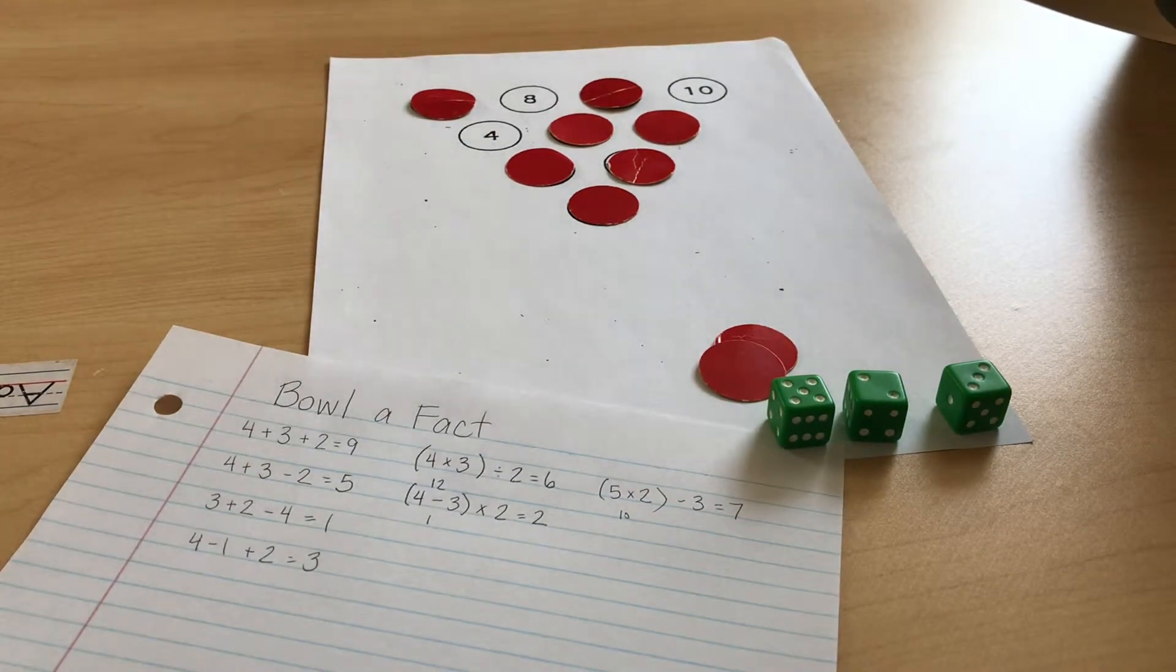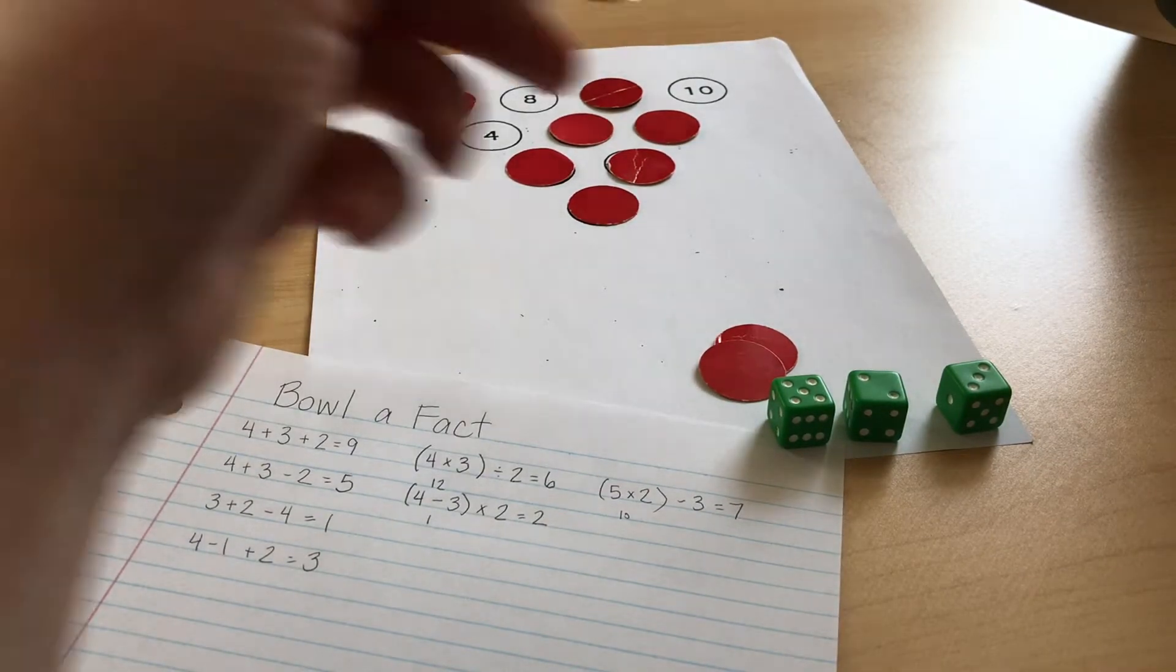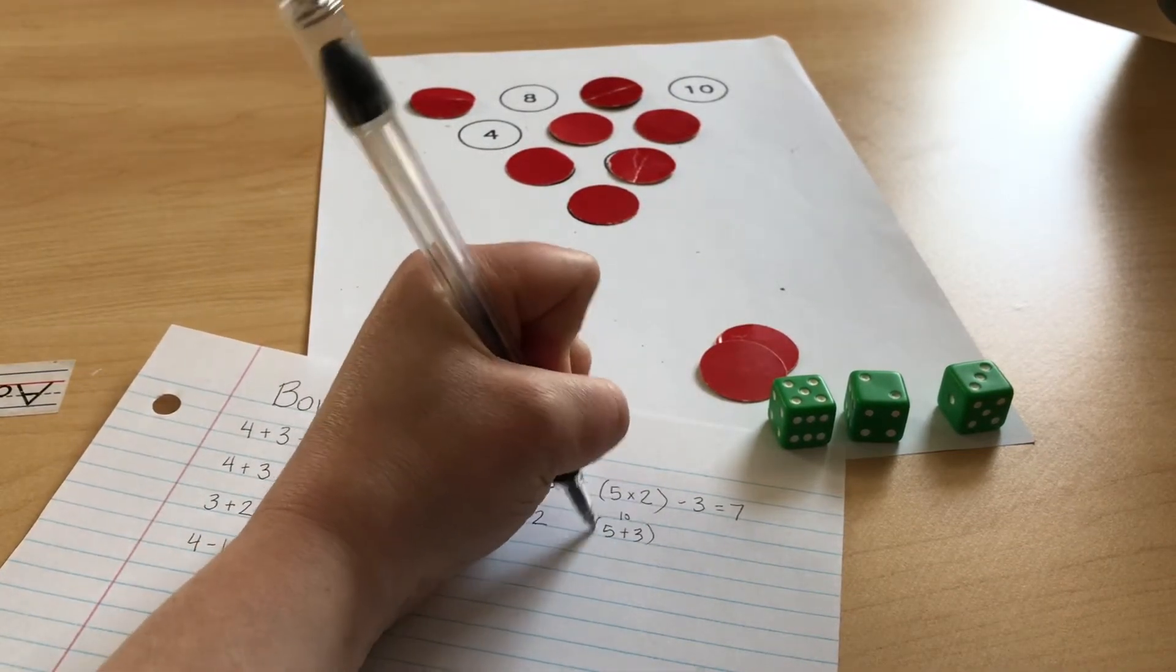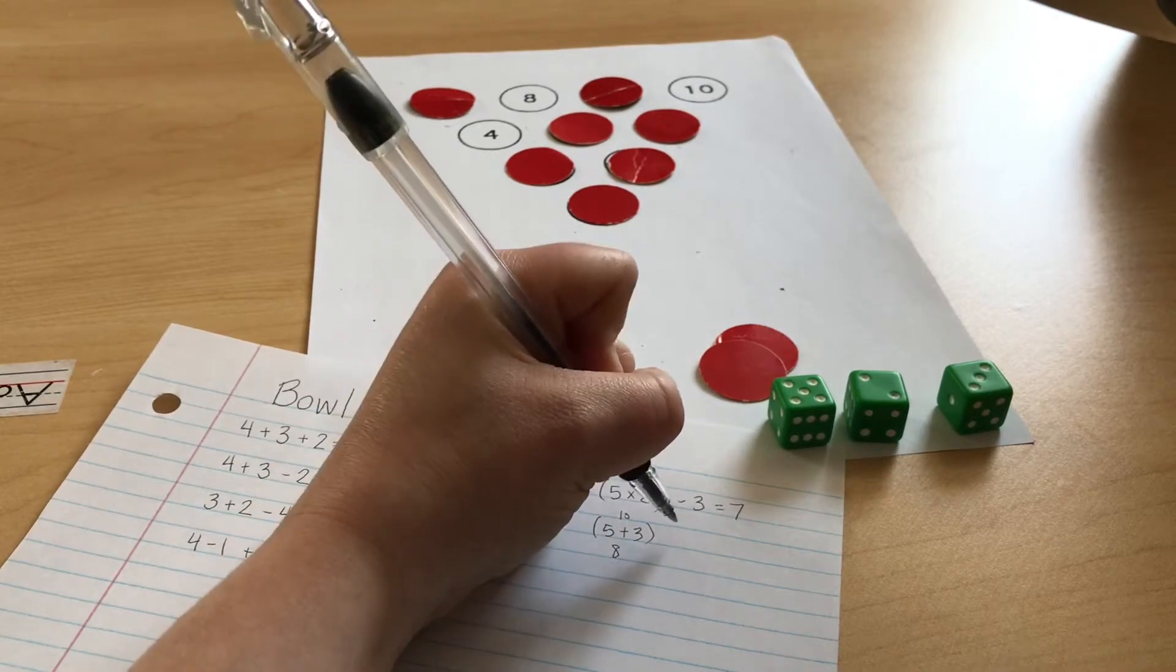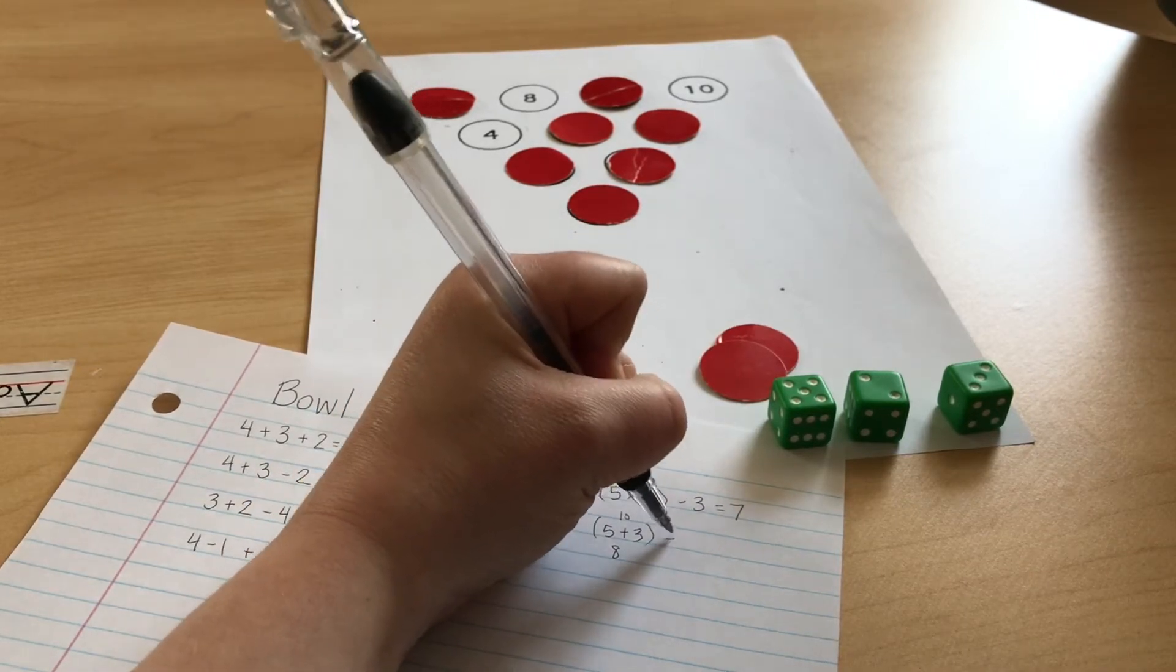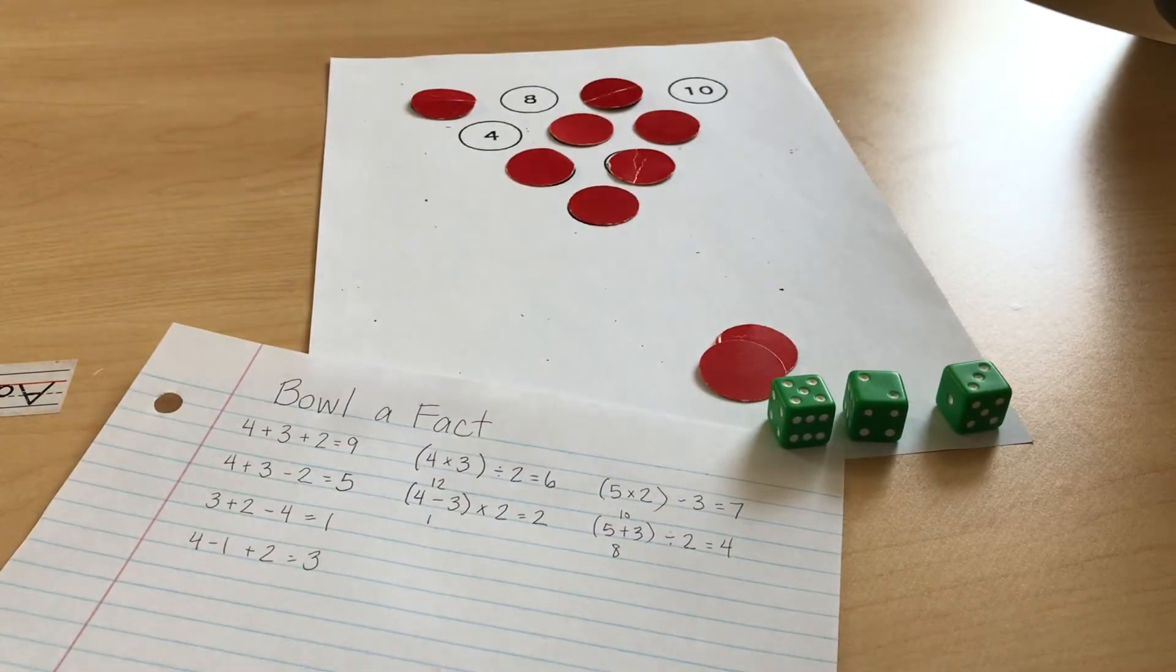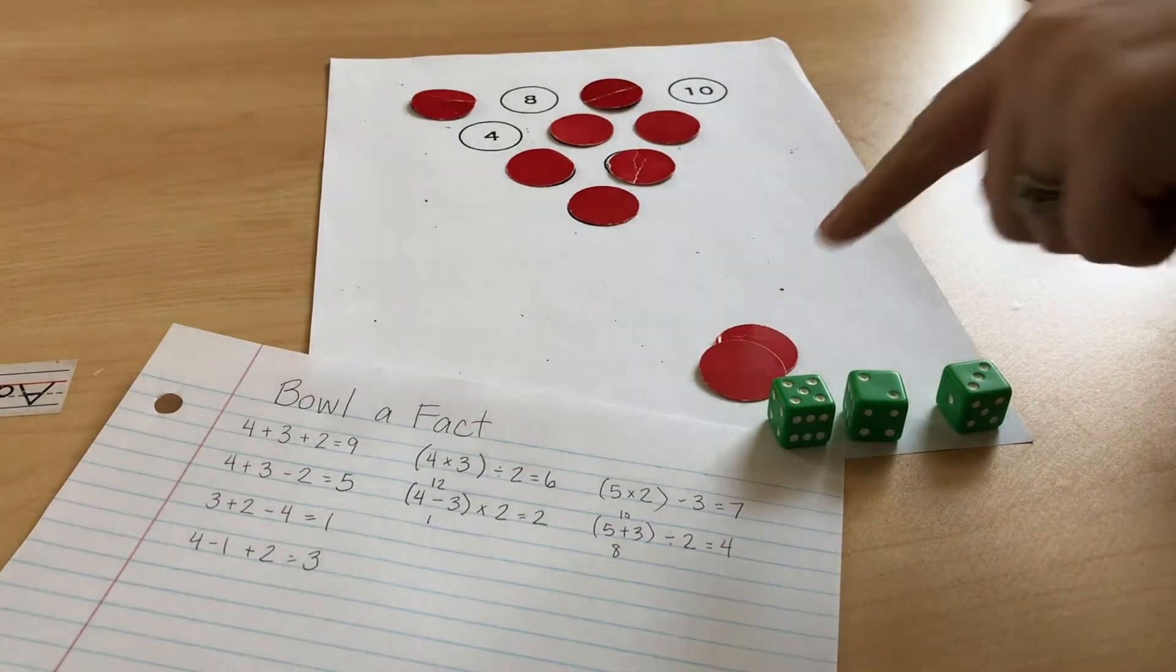I see that, well, five plus three is eight. And I have a two left. Eight divided by two, that's going to leave me with four. So we can cover up that four now.